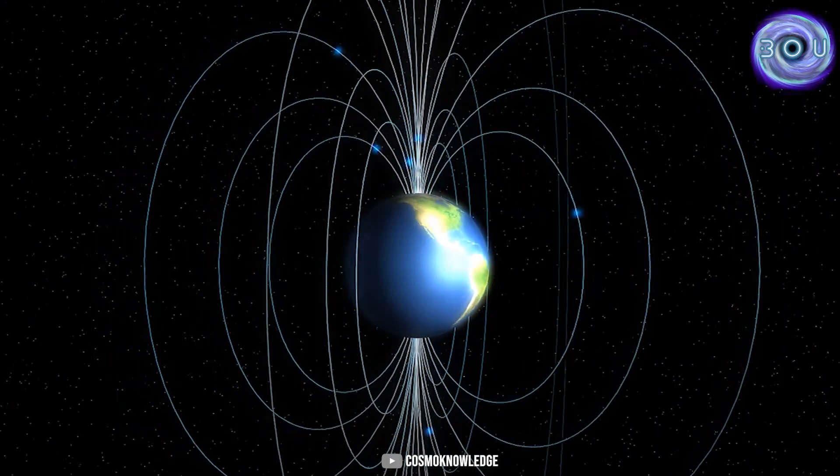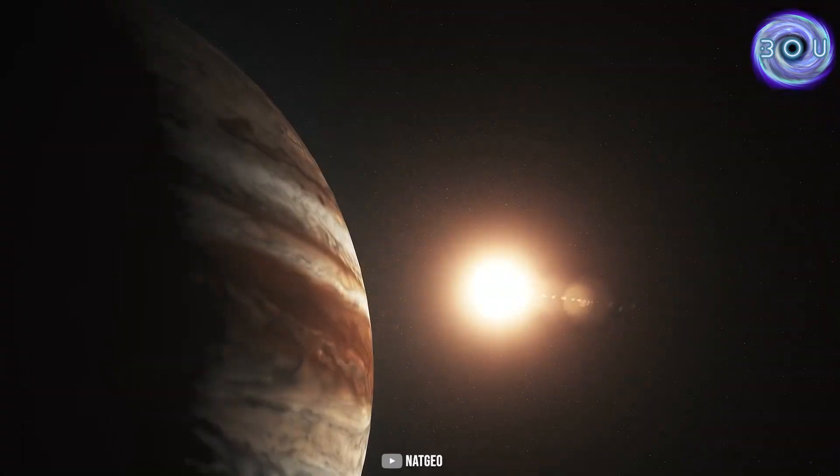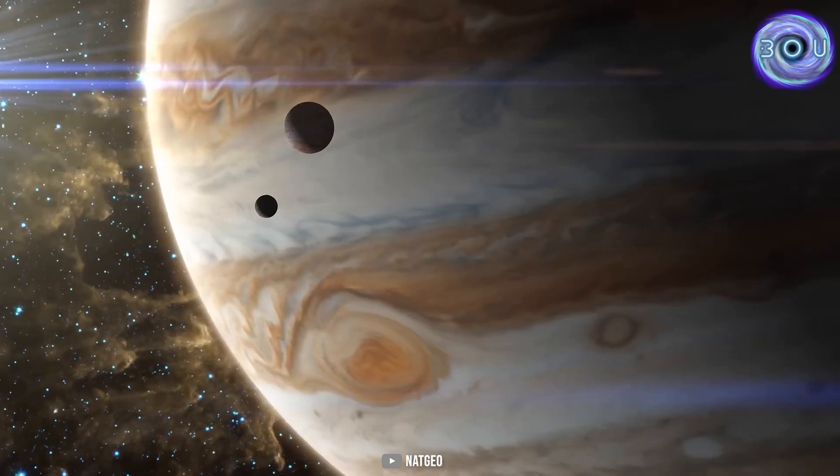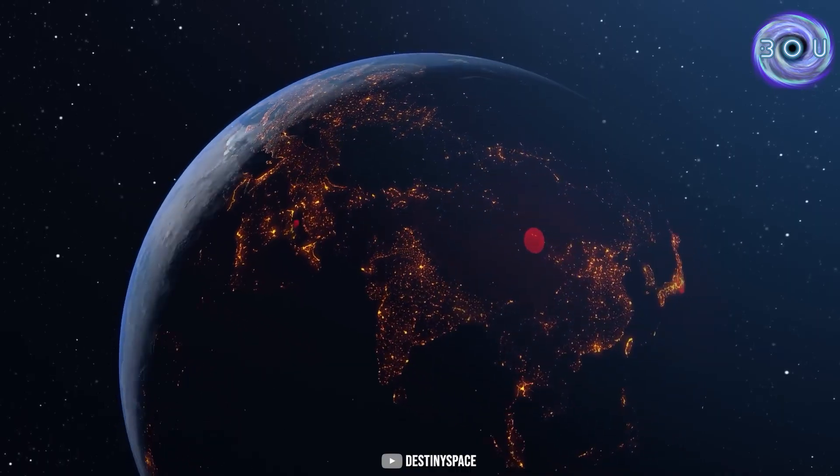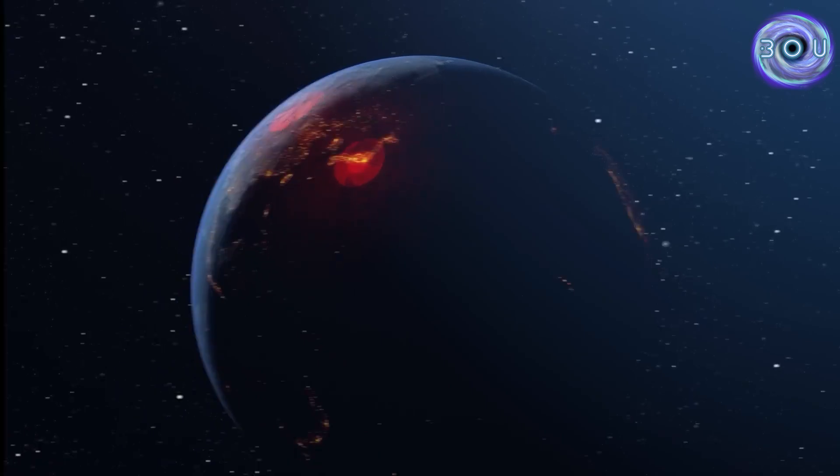But where does this magnetic field come from? And how is it generated? Do other planets in the solar system also have magnetic fields? Is it possible for this magnetic field to one day be destroyed and endanger life on Earth?